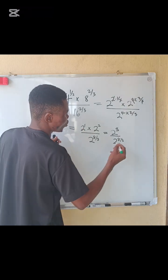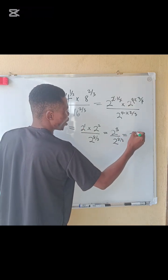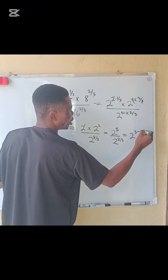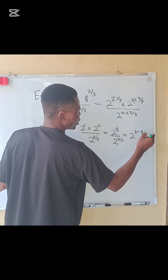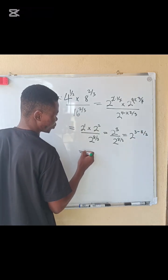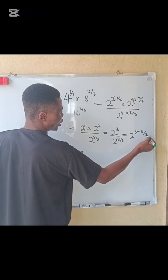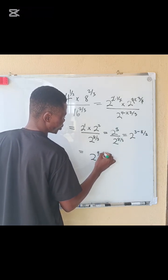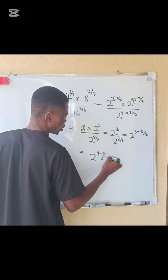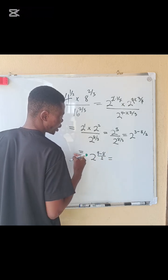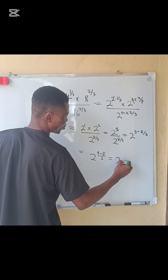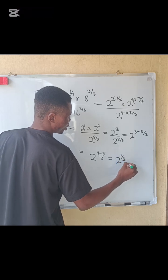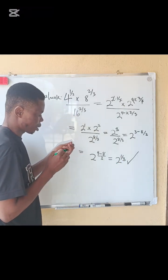We have 2 power 3 minus 8 over 3. So we proceed with the fraction, 3 times 3 here will give you 9, right. So 2 power 9 minus 8 divided by 3. Equals to 9 minus 8 that is 1, so the final answer becomes 2 power 1 over 3. This is the answer.